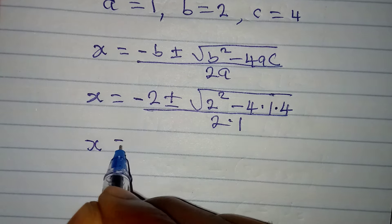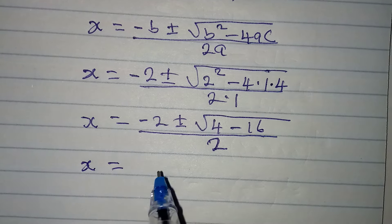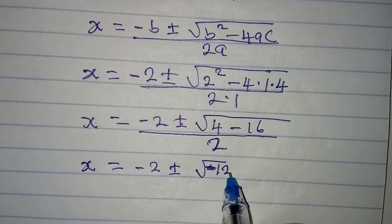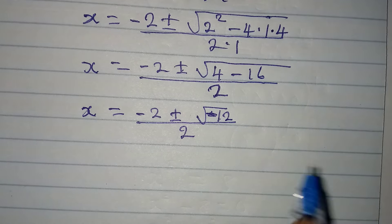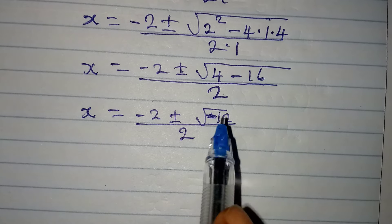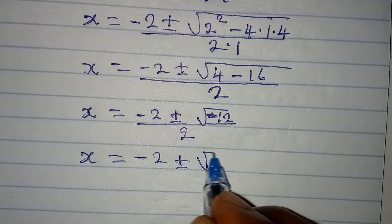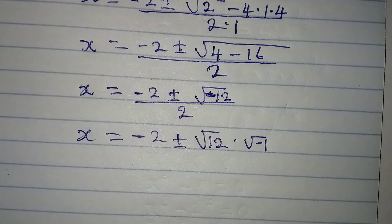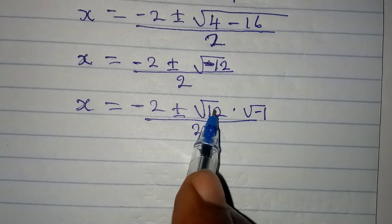From here, x equals minus 2 plus or minus the square root of minus 12, all over 2. I'll pick out the negative from under the square root, so x equals minus 2 plus or minus the square root of 12 times the square root of negative 1. Remember, the square root of negative 1 is i.